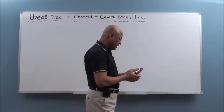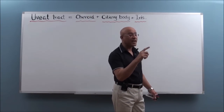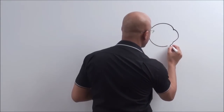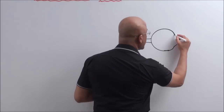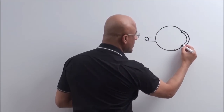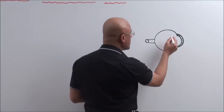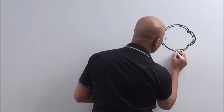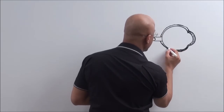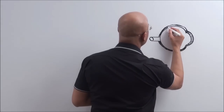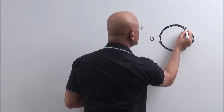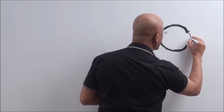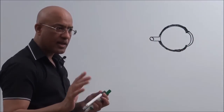The eyeball basically has three main layers. The outermost layer is considered a protective layer. The interior-most area of this outermost layer is transparent — this is called the cornea. The other part is white, made of collagen; it's a tough membrane and this is called the sclera. So the outermost coat of the eyeball is the protective part: its posterior five-sixths consists of the sclera, and the anterior one-sixth is the cornea, which is transparent.